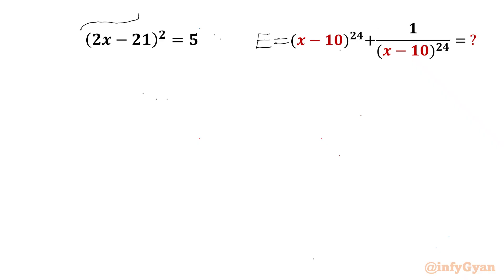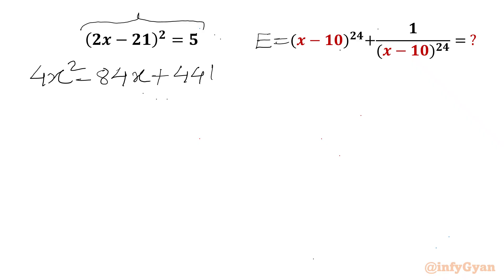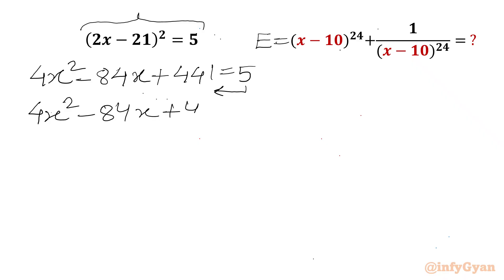I will begin with the given equation: (2x - 21)^2 = 5. Let us apply the (a - b)^2 formula. We will get 4x² - 2 times 21 is 42, times 2 gives 84x. 21 squared is 441. On the RHS we have 5. Now I will take 5 to the LHS to get 4x² - 84x + 436 = 0.